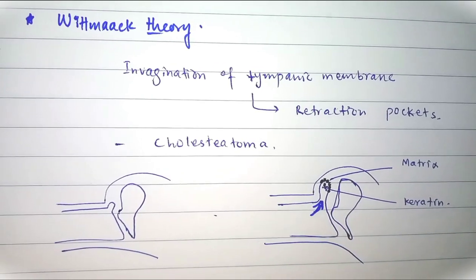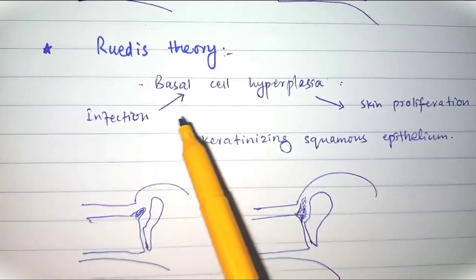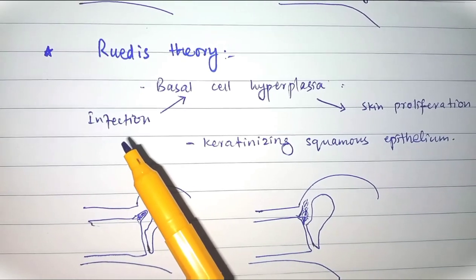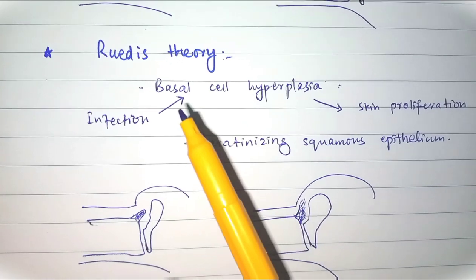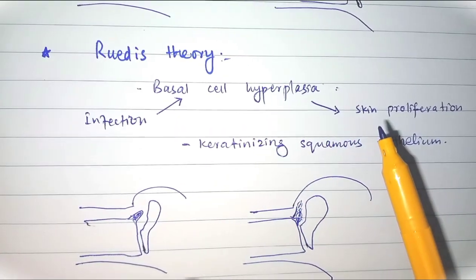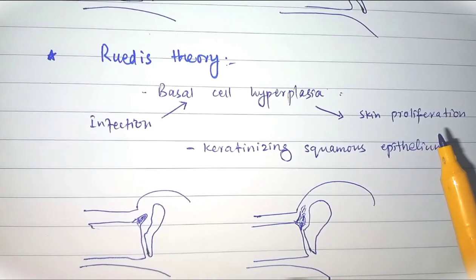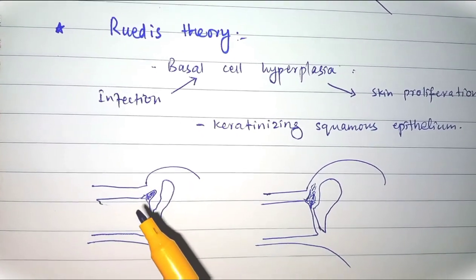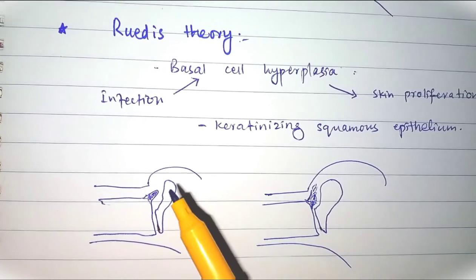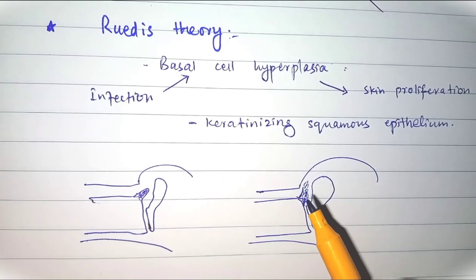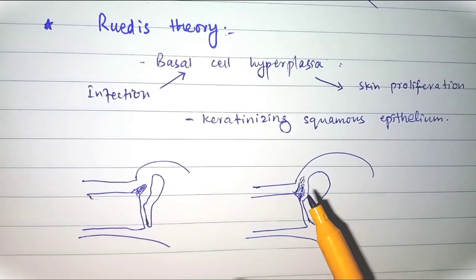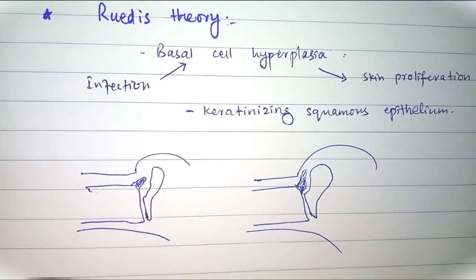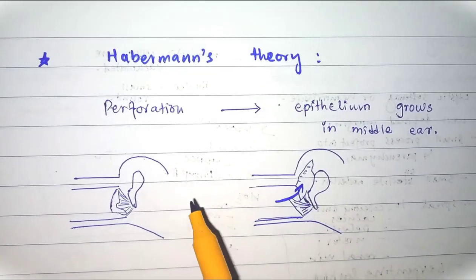The second theory is Ruedi's theory. According to this theory, there is basal cell hyperplasia triggered by infection. Whenever there is infection, it causes cell proliferation through basal cell hyperplasia. The basal cells of the germinal layer of the skin proliferate under the influence of infection, causing keratinization of the squamous epithelium. As you can see, in the attic part of the tympanic membrane, under infection there is proliferation of the germinal layer cells, which can ultimately form a cholesteatoma.